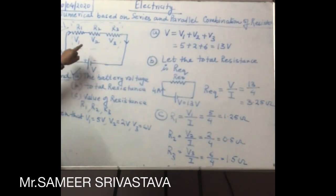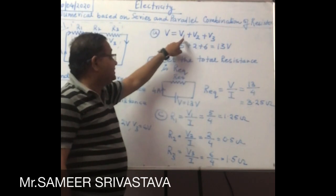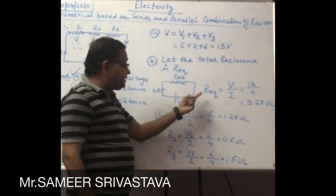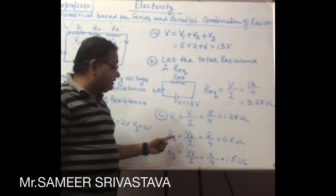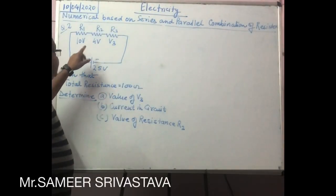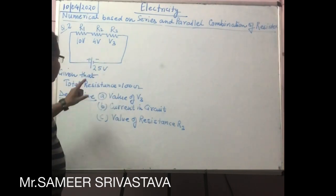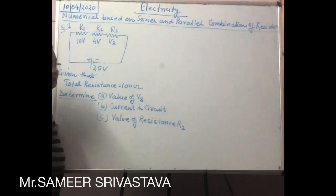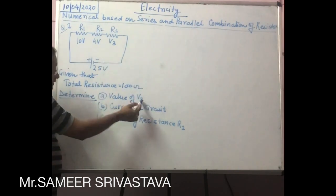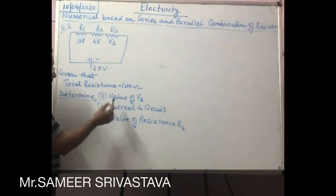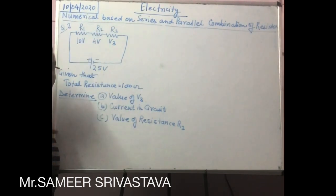To conclude: for battery voltage we use the summation V1 plus V2 plus V3. For equivalent resistance, current is 4 ampere and battery voltage is 13 volt, so equivalent resistance is 3.25 ohm. For the second problem, the given circuit is again a series circuit. The total battery potential and total resistance of the circuit are given, and we have to find the potential difference across R3, the current in the circuit, and the value of resistance R2.